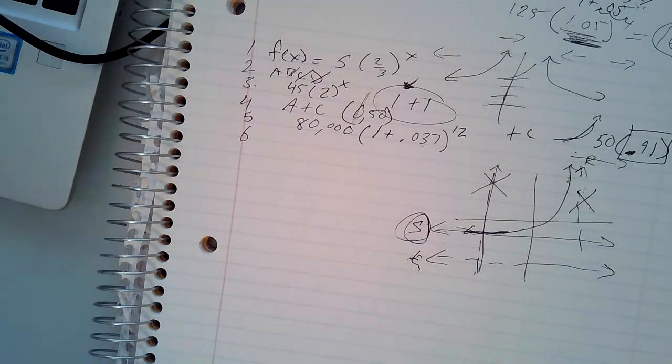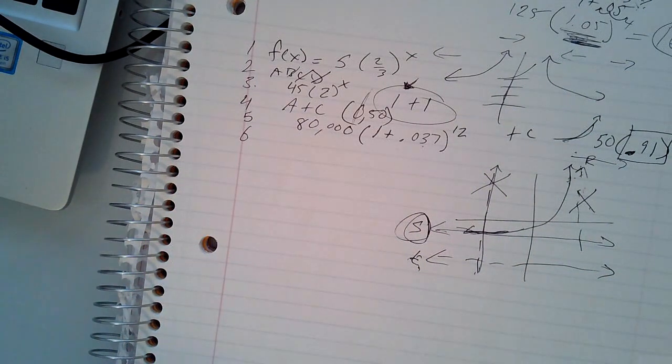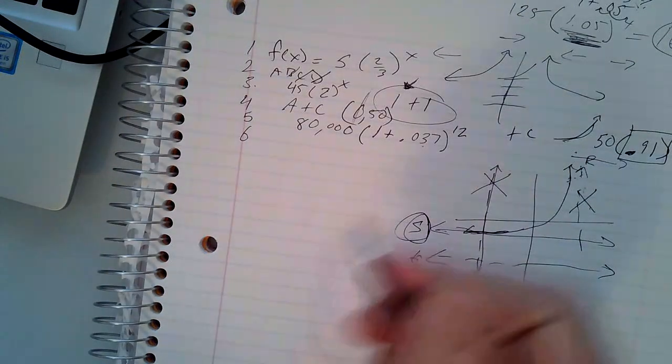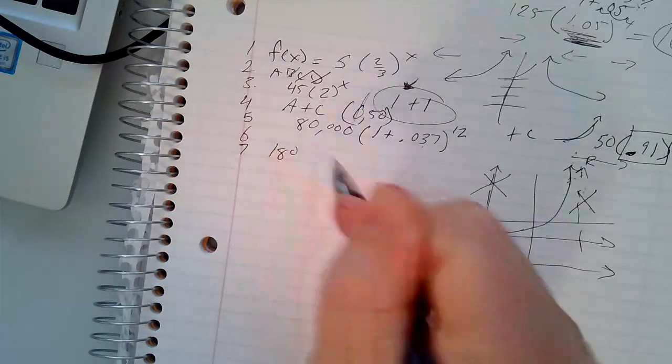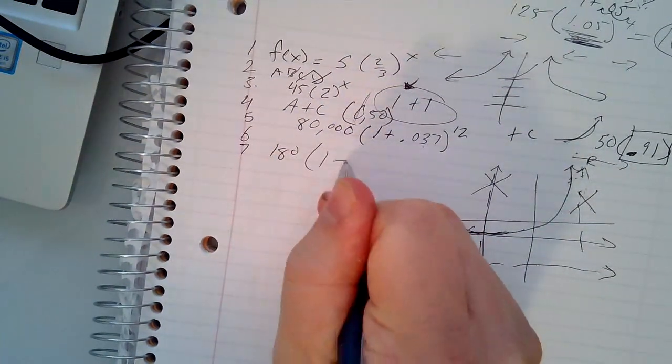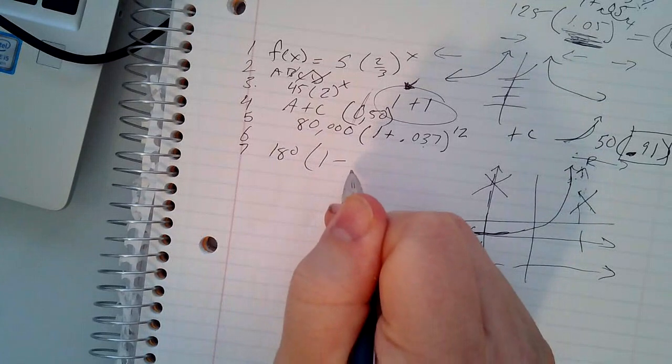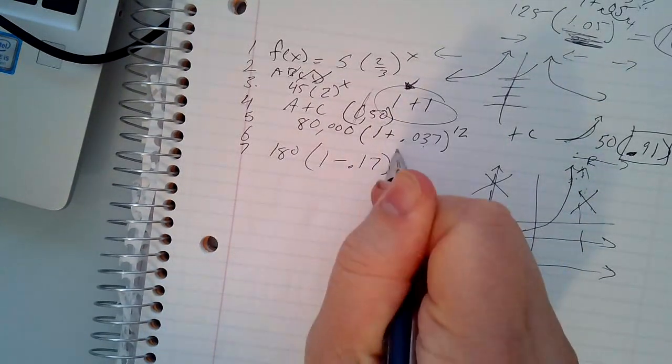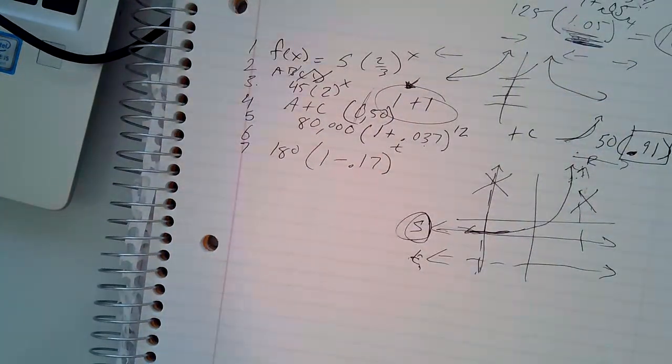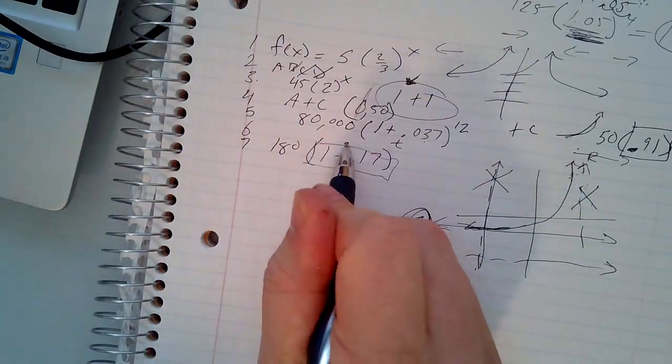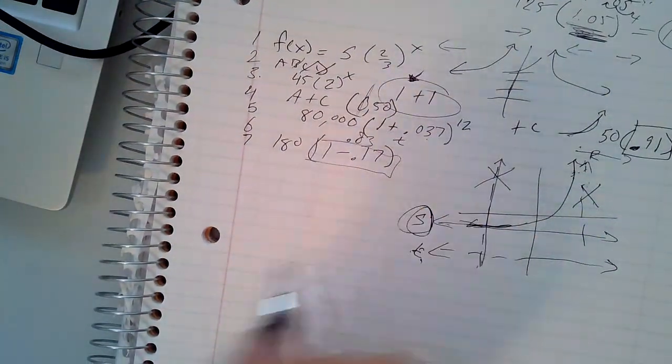Number seven says Bismuth-210 is an isotope, and it decays by about 17% each day. A sample initially has a mass of 180 milligrams. That function models A, the amount, after T days. And then it says, is that true or false? Well, we know that the equation is going to have the initial amount, which is 180 times (1 - 0.17)^T. Well, if you do some simple math, it does give you 0.83. So this answer would be true.